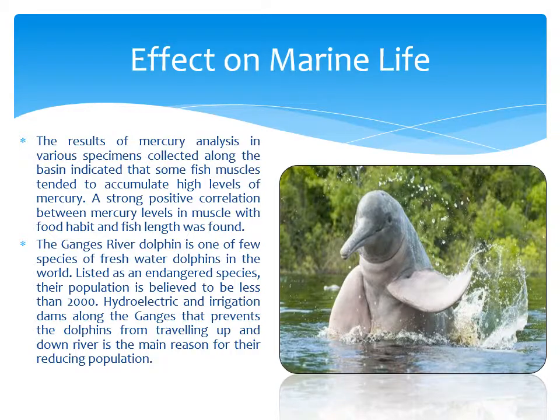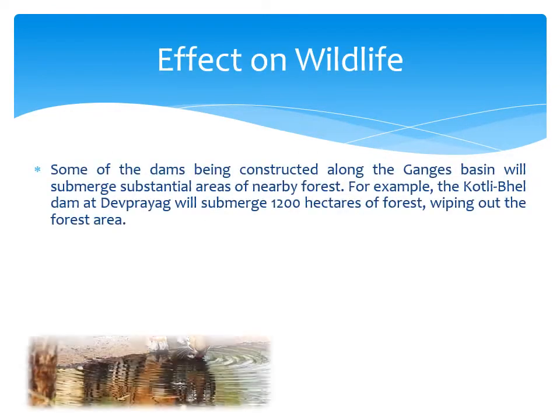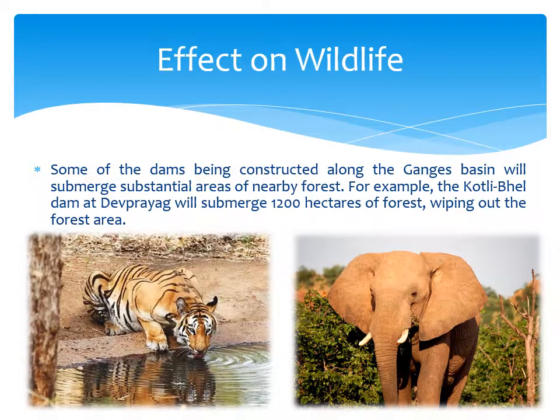Effect on wildlife: Some of the dams being constructed along the Ganga basin will submerge substantial areas of nearby forest. For example, the Kotli Bhel Dam at Devaprayag will submerge 1,200 hectares of forest, wiping out that entire forest area.